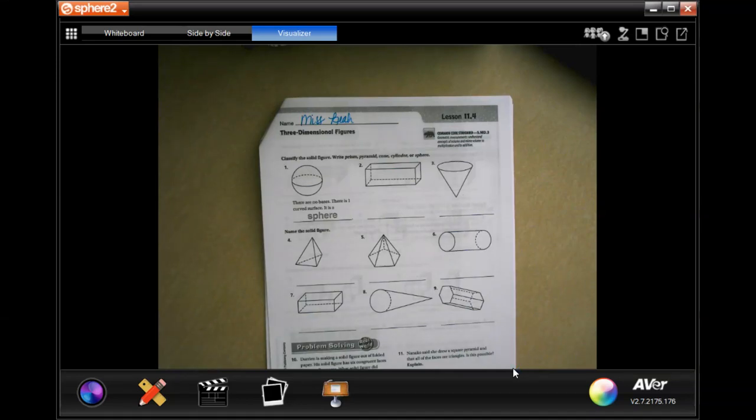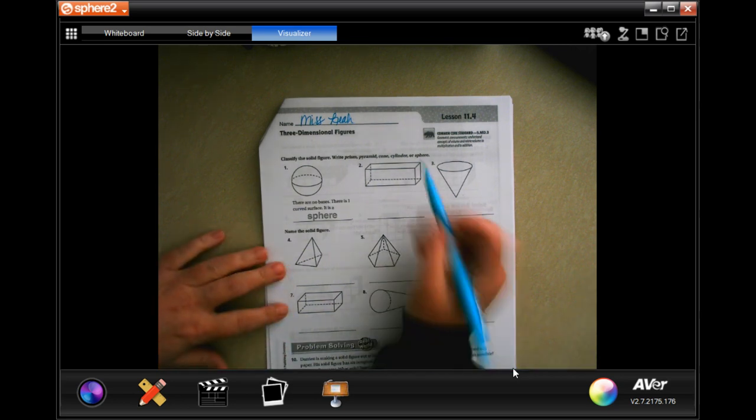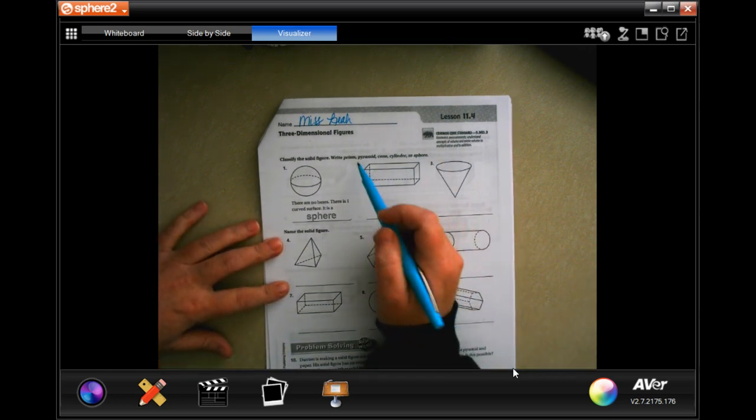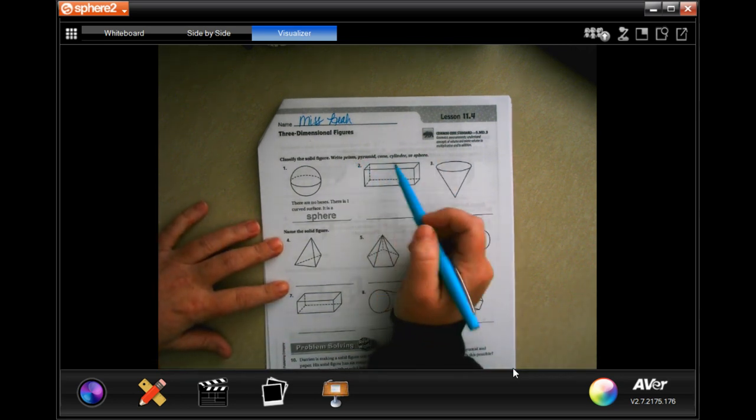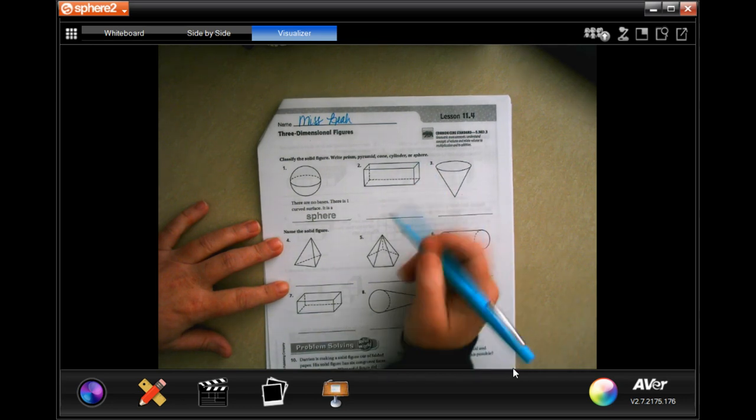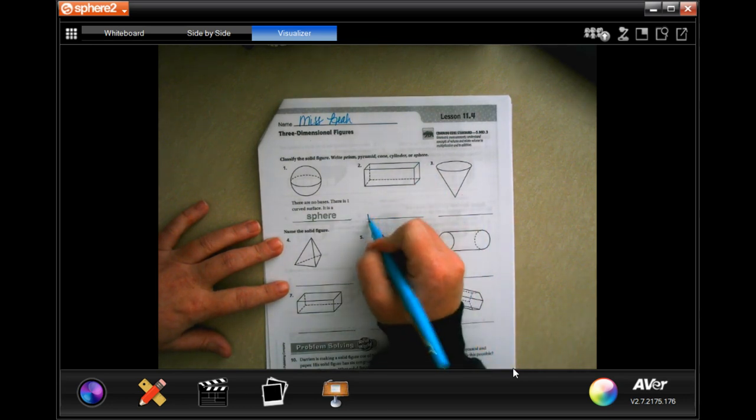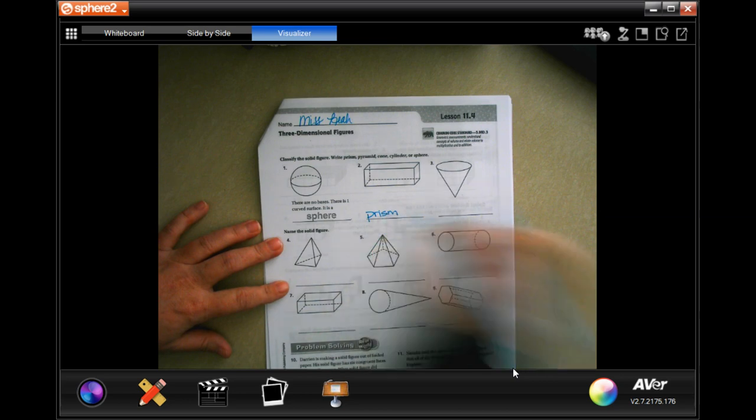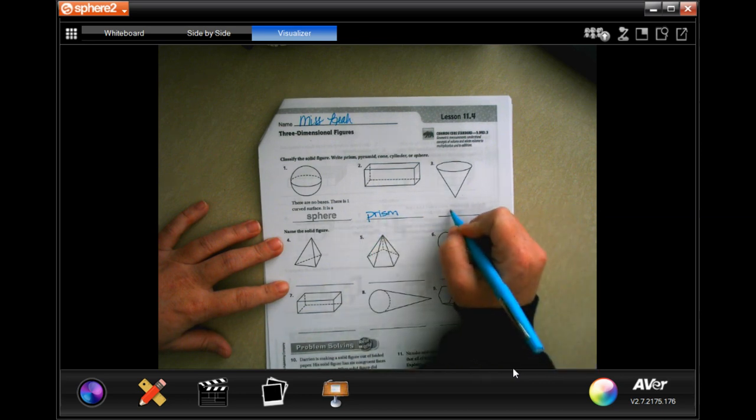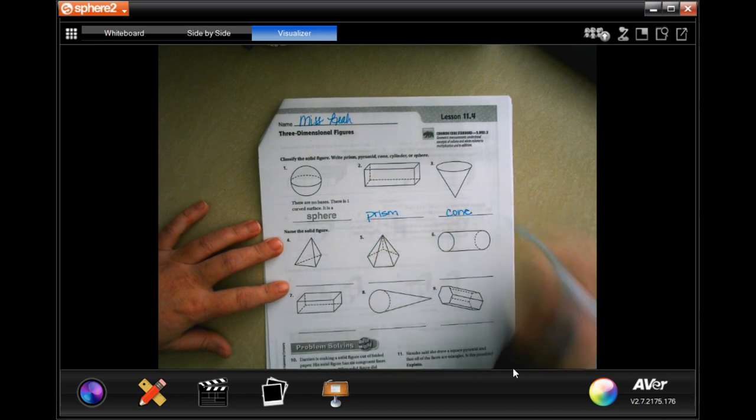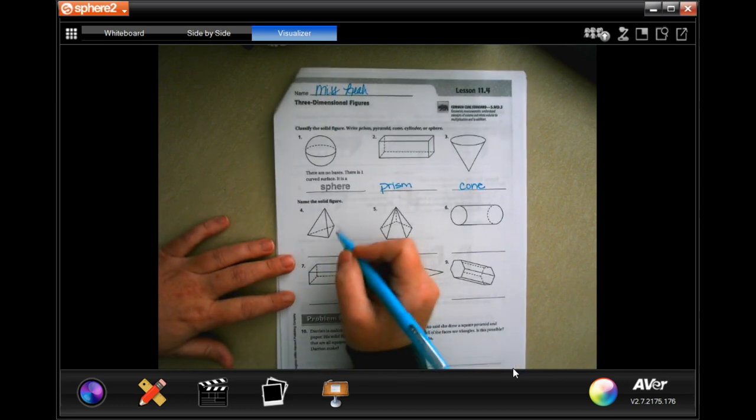Hey y'all, welcome to fifth grade chapter 11 lesson four. We're going to go ahead and get started with number two. So this, I want this right: prism, pyramid, cone, cylinder, or sphere. Well out of those this would definitely be a prism. This looks just like an ice cream cone pyramid.